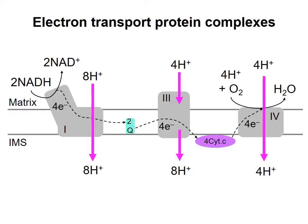Now I want to go back and pick up a loose end. What about the NADH produced in glycolysis? Does this NADH also contribute electrons to the electron transport chain? The answer is yes, but these NADH present a bit of a problem to the cell because glycolysis happens in the cytosol. So these NADH are made in the cytosol, but complex 1 accepts electrons from NADH in the matrix — so the NADH from glycolysis is made in the wrong place to contribute to the electron transport chain.